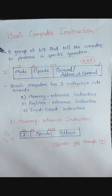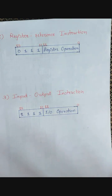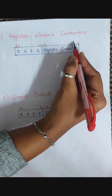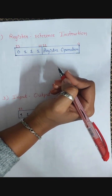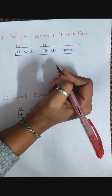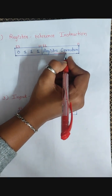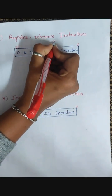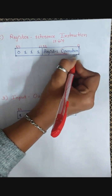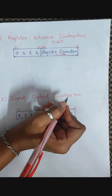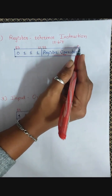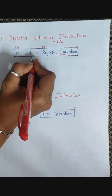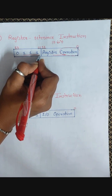Next is the register reference instruction. Here the operand makes a reference to a register variable, so we don't have any memory address. Bits 0 to 11 represent the register operation — which kind of operation we are going to perform. Unlike memory reference instructions which use an opcode, here we directly have the register operand in those 12 bits. The bits 12 to 14 are fixed as 111 for register reference instructions.